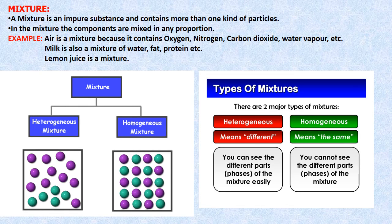A mixture is an impure substance and contains more than one kind of particle. In a mixture, the components are mixed in any proportion. For example, air is a mixture because it contains oxygen, nitrogen, carbon dioxide, water vapour, etc. There are two types of mixtures: heterogeneous means different, and homogeneous means same.